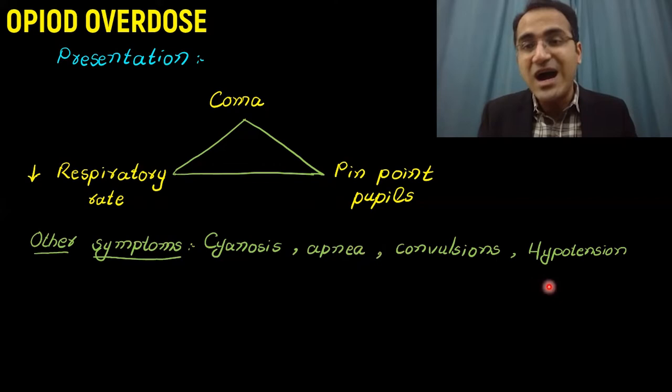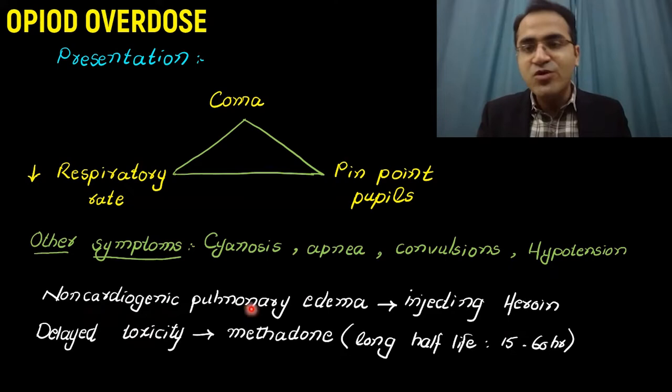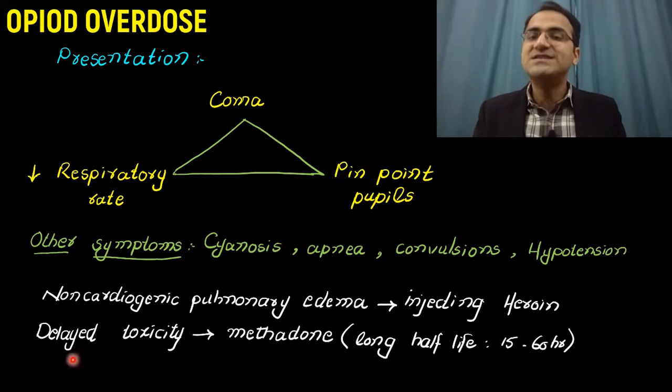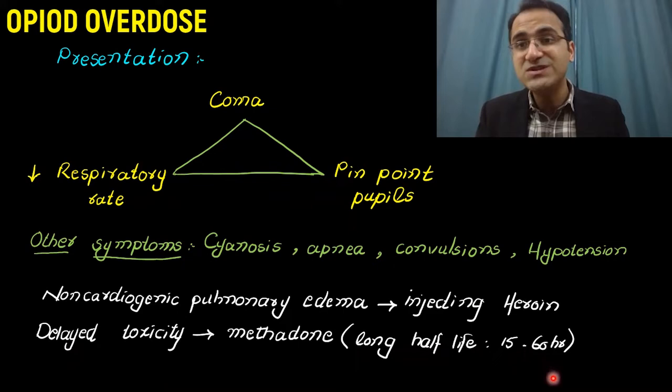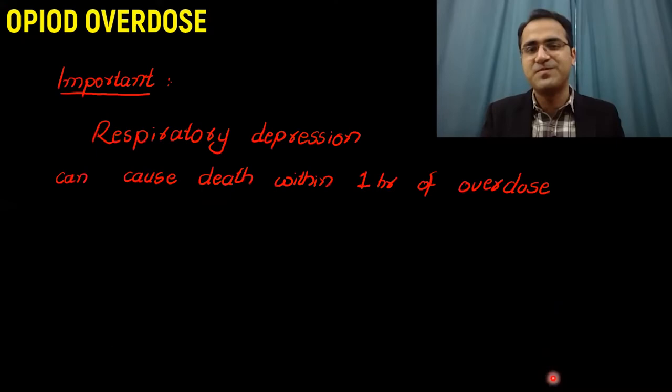Hypotension due to CNS depression can occur. Non-cardiogenic pulmonary edema can be seen in patients who are injecting heroin. Some opiate compounds have delayed toxicity — for example, methadone, which has a long half-life of 15 to 60 hours, and presents with respiratory depression after a long time compared to other opiates.